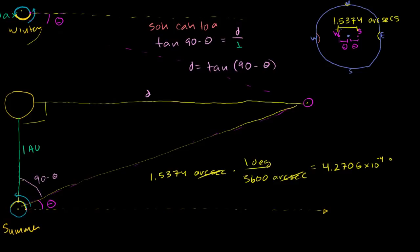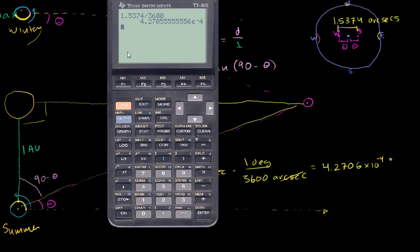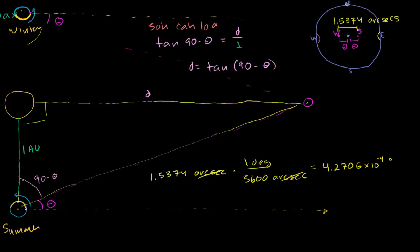Now, to be clear, this is the total angle. The angle we care about is going to be half of this, so we divide by 2. 4.2706 times 10 to the negative 4 divided by 2 is 2.1353 times 10 to the negative 4 degrees. So that's this angle — the shift from center — which is 2.1353 times 10 to the negative 4 degrees.